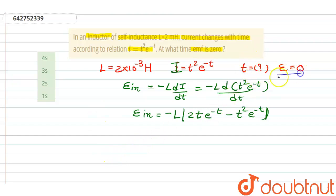According to question, we have to find time when emf will be 0. So emf equals 0, so minus L times 2t e minus t minus t square e power minus t.